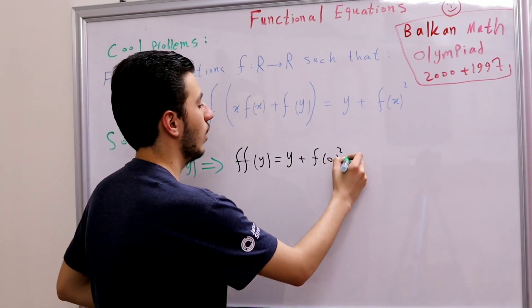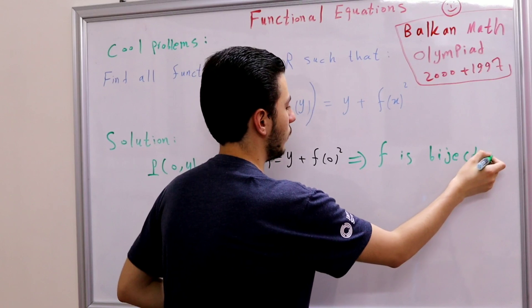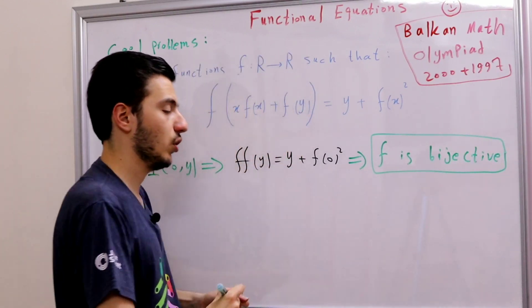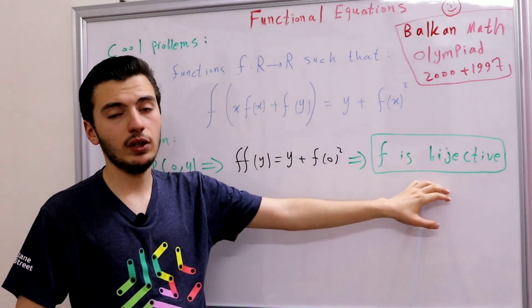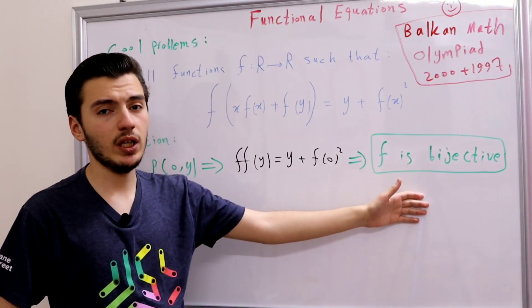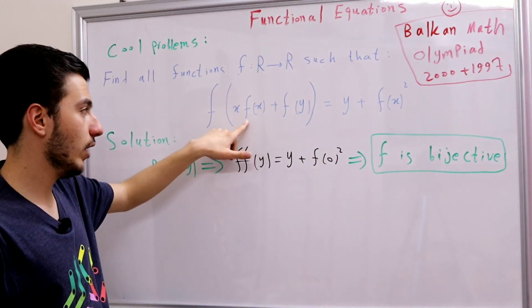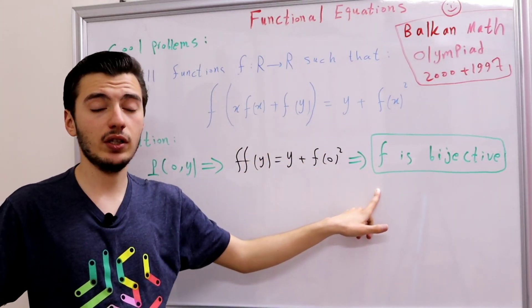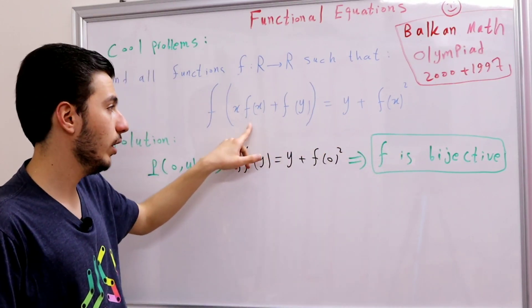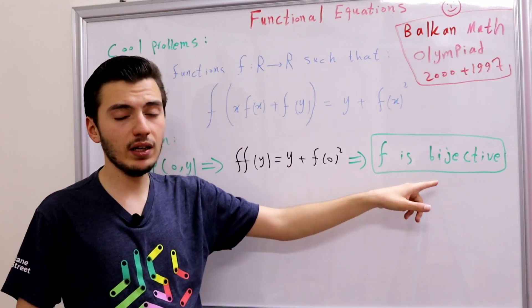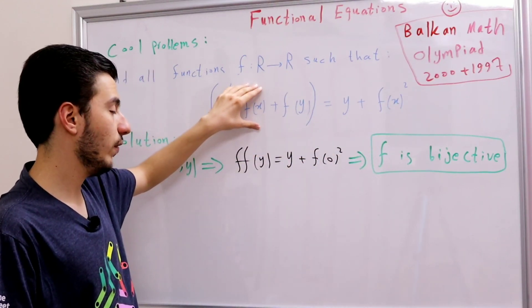So we can write straightforwardly that f is bijective. Since our function f is bijective, it is also surjective, so we can use surjectivity tricks. Looking at the functional equation, f(x) appears twice. Since f is surjective, we can pick some alpha and make f(alpha) equal to zero, substituting x with alpha. This lets us get rid of the x·f(x) and f(x)² terms, giving a very clean equation.